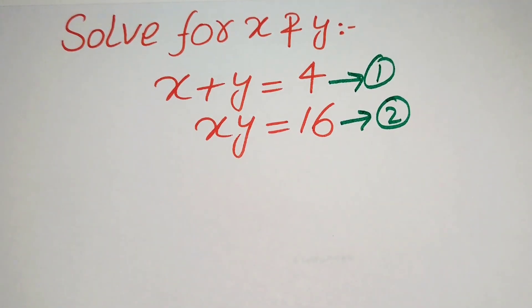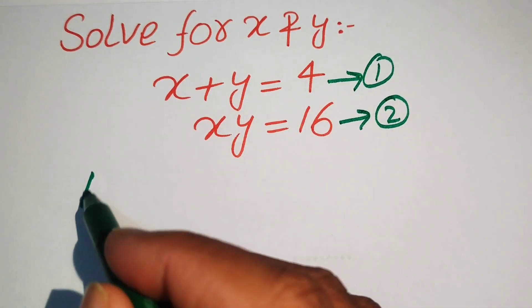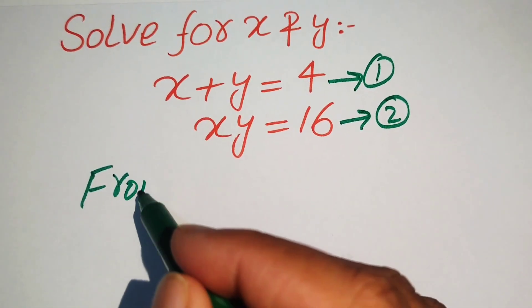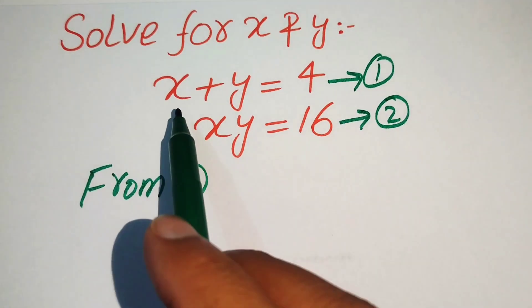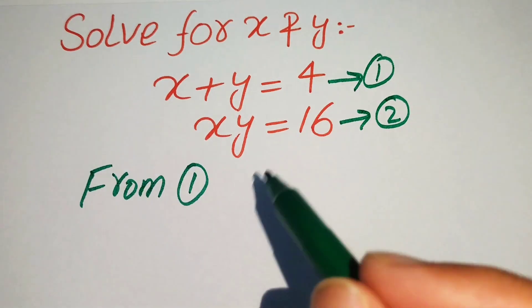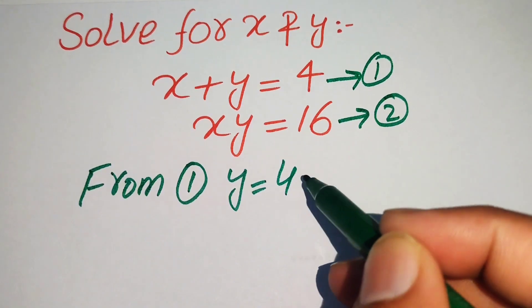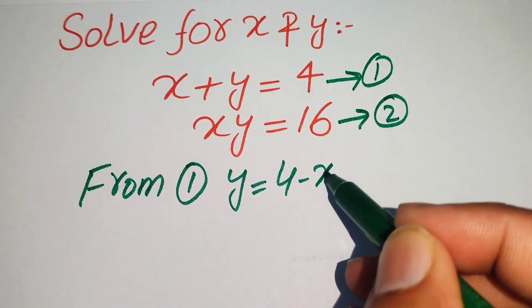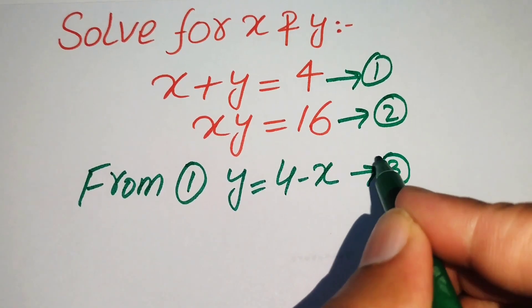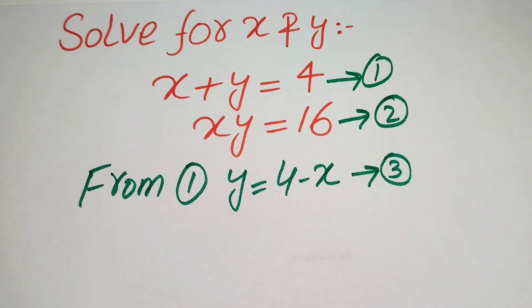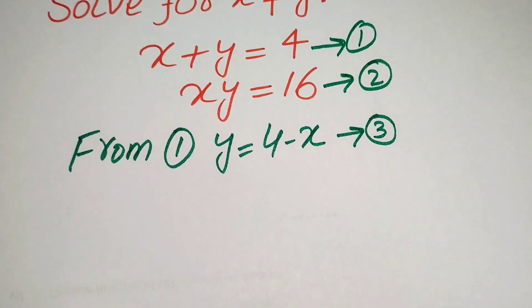Now we focus on equation number one. We move x to the right-hand side and get y equals 4 minus x. We call this equation number three.